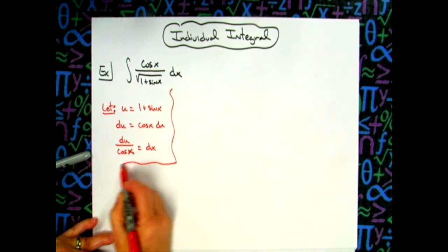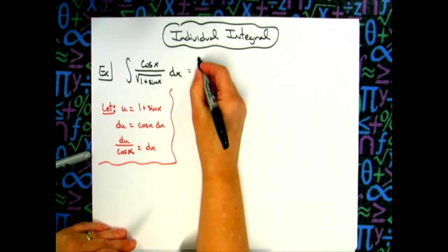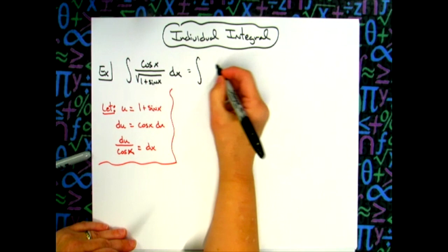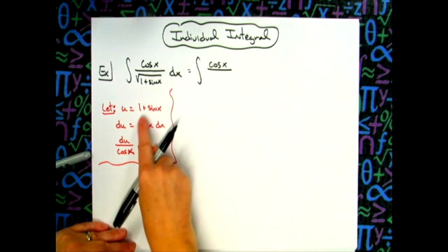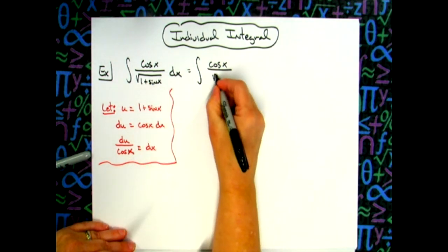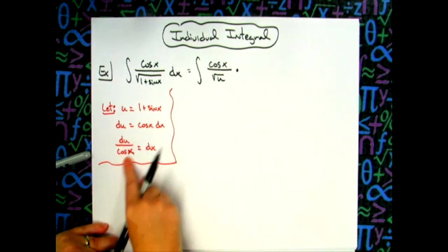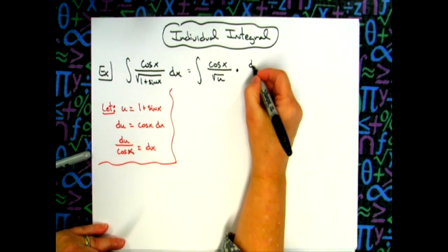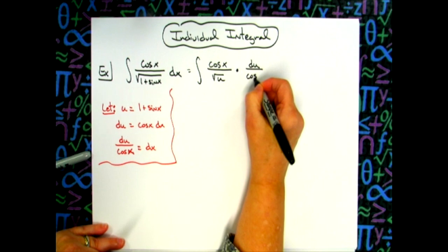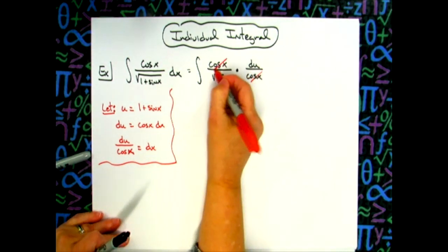All right, once that is completed, then you come back up to your original integral and you start doing your substitutions. I'm going to leave that cosine of x there in the top. I'm going to replace the bottom here with a square root of u. And I'm going to replace the dx for exactly what it equals, which is du over cosine x. That's going to allow those cosines to cross out really nicely.